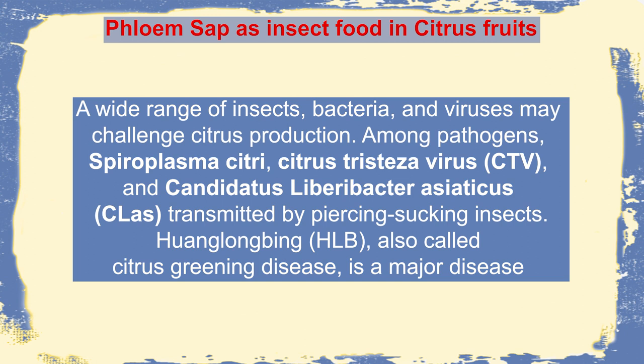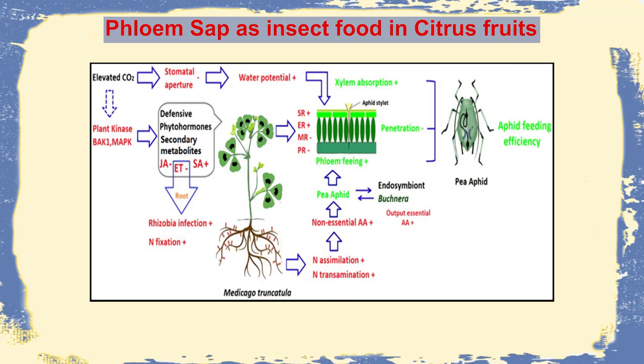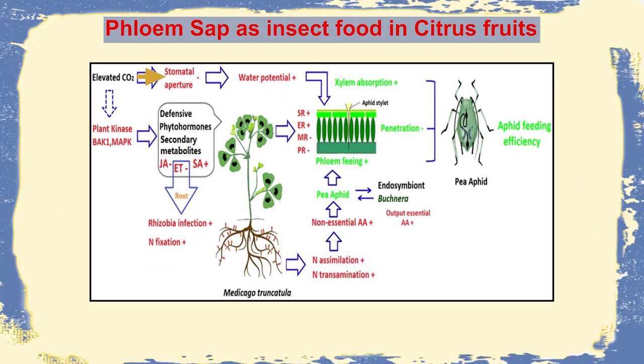Because the phloem sap is nutritious, insects will invade the phloem. While invading, some pathogenic organisms are set free into the plant, and the plant will show clear stages of infection. At the same time, when there is elevated carbon dioxide concentration, there will be some impact on stomatal aperture and water potential will go up. At this point, aphids will feed on the phloem sap, and this feeding will bring about some chemical change that produces some sort of defense, as noted in Medicago truncatula.